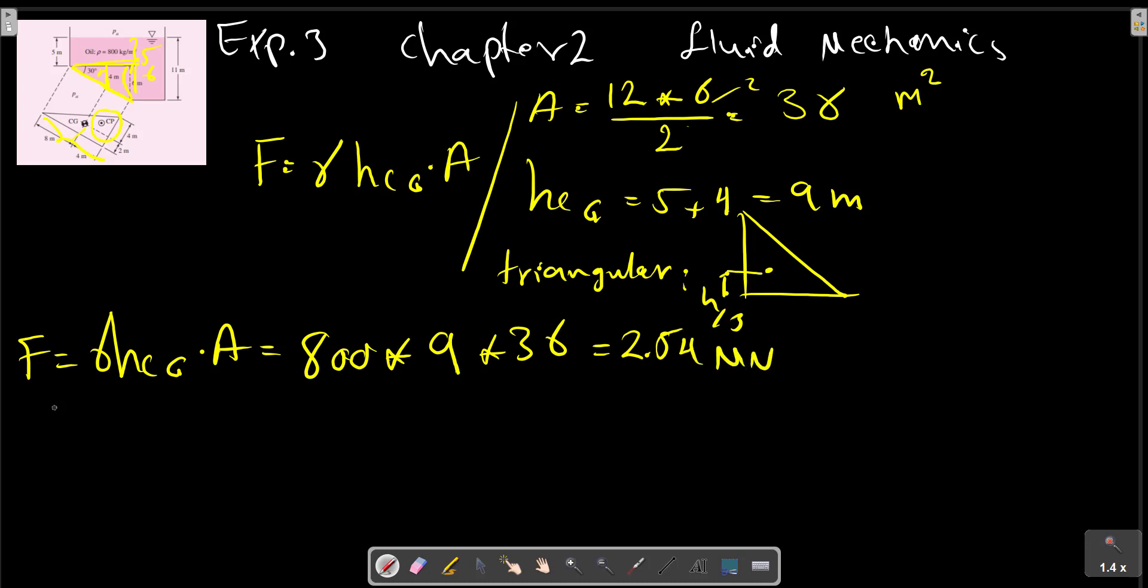For calculating CP position, we should first calculate IXX and IXY for a triangular shape. IXX is equal to, for a triangular shape, B L cubed over 36.